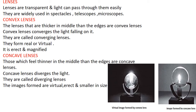Whereas in concave lenses, they are thinner in the middle and at the edges they are very thick. They diverge the light, that is why we call them as diverging lenses. The images formed are virtual, erect, and smaller in size.